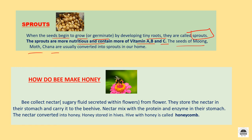Now, how do bees make honey? Bees collect nectar from flowers. Nectar is the sugary fluid secreted within flowers. Bees store the nectar in their stomach and carry it to the beehive. The nectar mixes with proteins and enzymes in their stomach and is converted into honey. Honey is stored in hives, and a hive with honey is called a honeycomb.